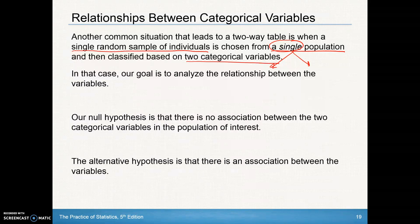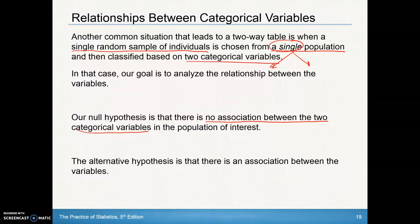If that's the case, our goal is to analyze the relationship between the variables. Our null hypothesis is that there is no association between the two categorical variables in the population of interest. The alternative is that there is an association.